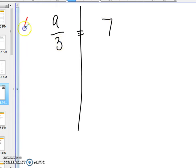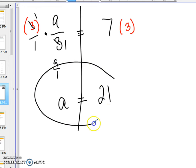I've got to get rid of the divided by 3 by doing the opposite, multiplying by 3. Now when I have 3 over 1 times a over 3, the 3's cancel each other out. All I have is a over 1, and we don't really write a over 1, we just write a. 7 times 3 is 21, and there's our solution. a equals 21.